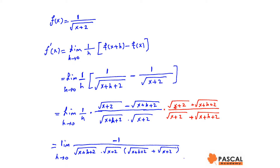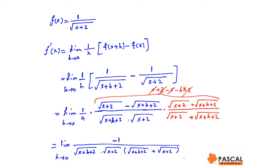By rationalizing the numerator, we get x plus 2 minus x minus h minus 2. Collecting like terms, we have negative h on top. Negative h and h cancel out, so the derivative becomes the limit of negative 1 over √(x+h+2) times √(x+2) times √(x+h+2) plus √(x+2), as h approaches 0.